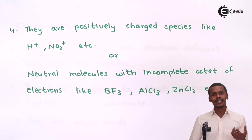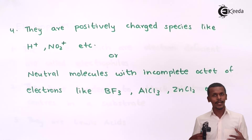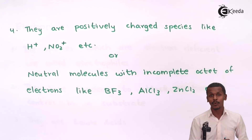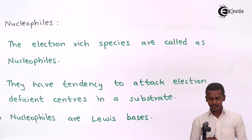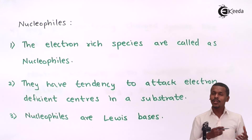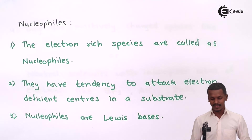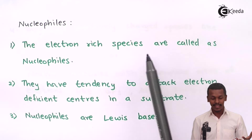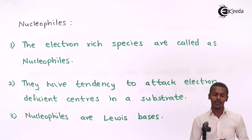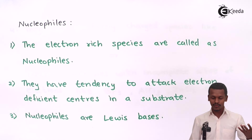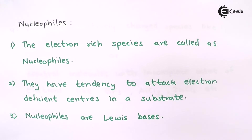Depending on the reaction, it can be an electrophilic or a nucleophilic reaction, and this plays a very vital role in converting a substrate into the desired product. Now let us understand nucleophiles. Nucleophiles are the opposite of electrophiles — they are electron-rich species. Being negatively charged themselves, they attack positively charged species.